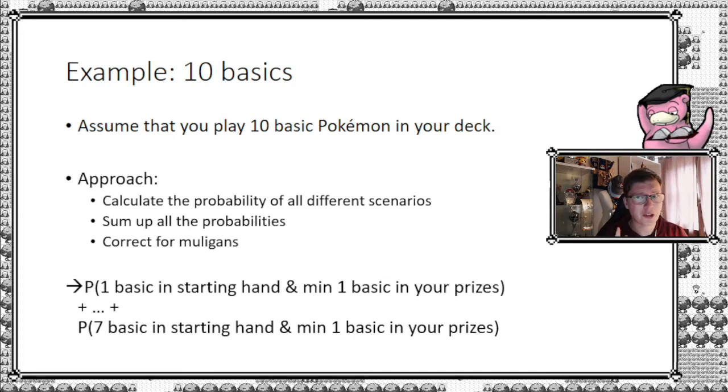You have to think about it as such that for each extra basic Pokemon we have in our starting hand, well of course there's less of a chance for there to be a basic Pokemon out in your prizes, right? So that's why we have to account for all these different scenarios. And of course we can just add up the probability that we get for each of these scenarios and then we correct the formula.